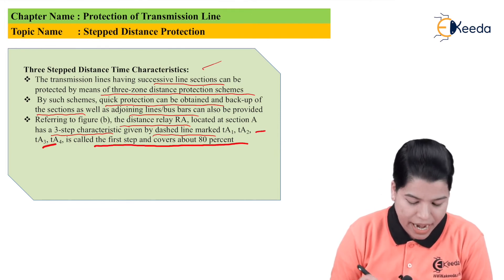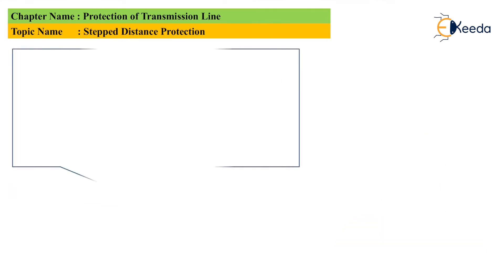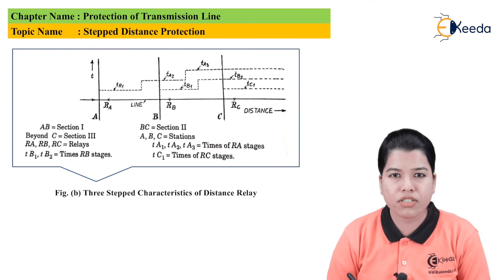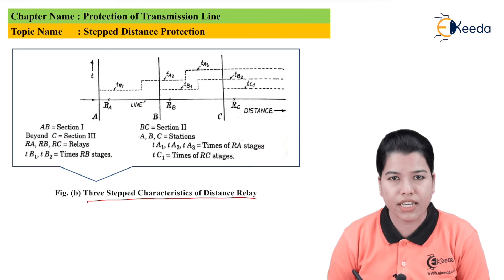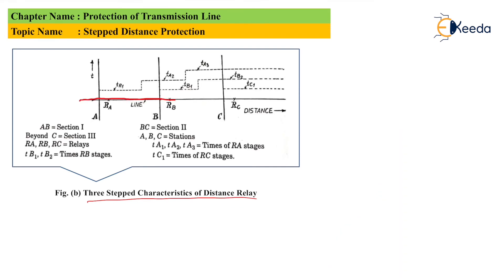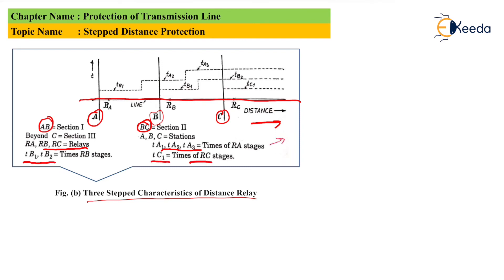The first step covers about 80% of the line section. The figure shows the diagram for the three-step characteristic of the distance relay. The complete line is divided into three sections A, B, and C, where AB is the first section, BC is the second section, and the section beyond point C is the third section. RA, RB, and RC are the relays at each station. TA1, TA2, TA3 are the operating times of the RA stages, TB1 and TB2 are the times of RB stages, and TC1 is the time of the RC stage.